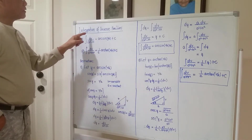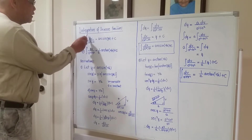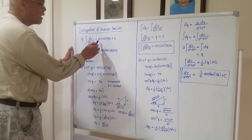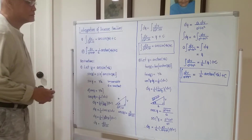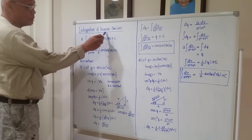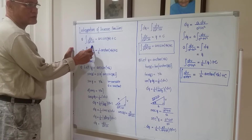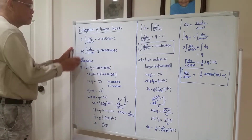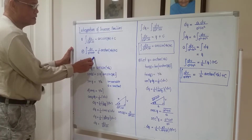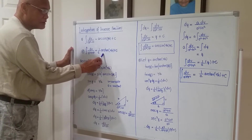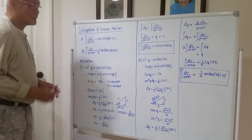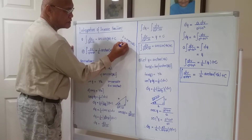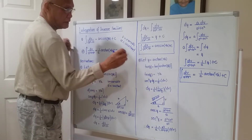I will give two formulas for integration of inverse functions. Formula number one: the integral of db over the square root of a² minus b² equals arc sine of b over a plus c. Formula number two: the integral of db over a² plus b² equals one over a times arc tangent of b over a plus c. Here, b is a variable and a is a constant — it's just a representation.